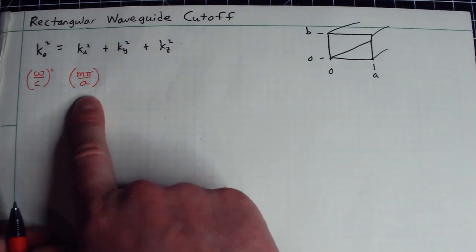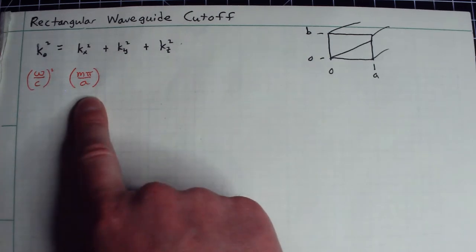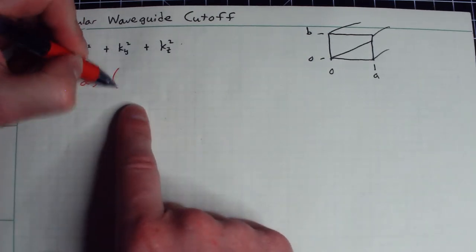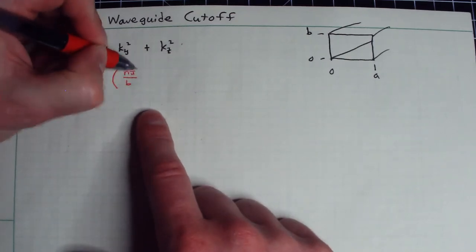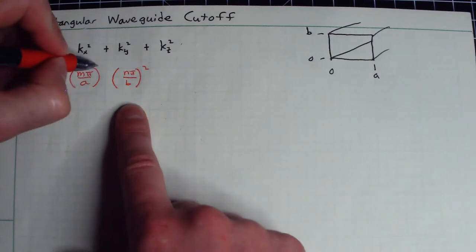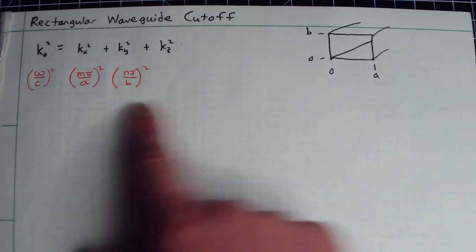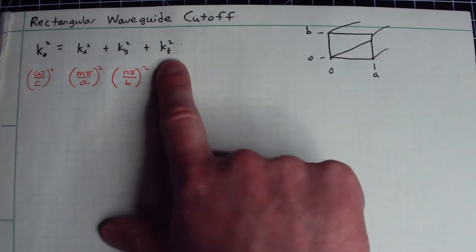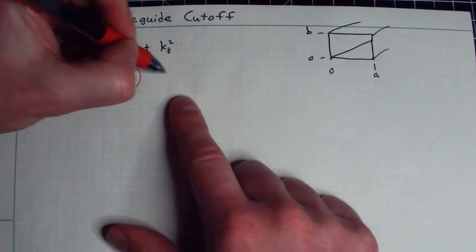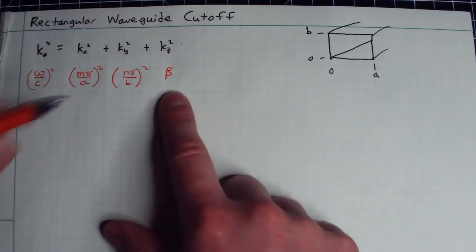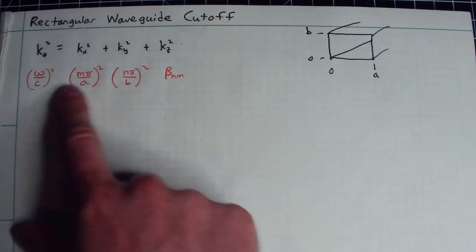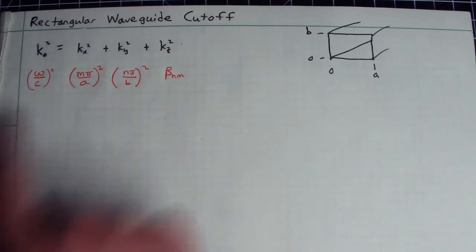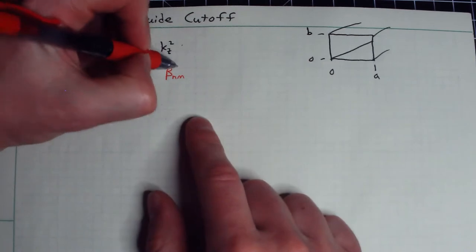So this x component to my wave vector, my wave number, had to satisfy this condition. And then likewise, for my y contribution, we showed that it had to be this n squared, n pi over b for the y value here. And then this was the longitudinal propagation constant, which we simply just gave the special character, beta sub m comma n, because it could change depending on m and n. And of course, we'll square that here.